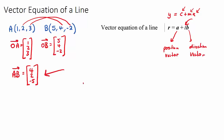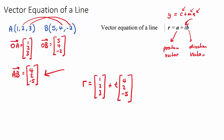So the vector equation of our line will be r equals our position vector plus t times our direction vector. I'll choose OA as the position vector, giving r = (1, 2, 3) + t(4, 2, -5). You could have chosen (5, 4, -2) instead — that's fine. This is our answer for the vector equation of the line. These three component rows are called parametric equations.